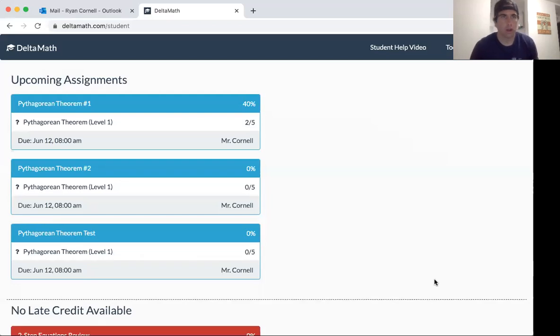What's going on everyone, Mr. Cornell here. Once again, today's video I'm going to go into Delta Math to show you exactly what assignments are for the fourth quarter and what it looks like when it says no late credit available for the older assignments. The older assignments really don't matter anymore because it was third quarter. I just want people to start focusing on the fourth quarter assignments that are due so that you can get an easy hundred in this class for the fourth quarter.